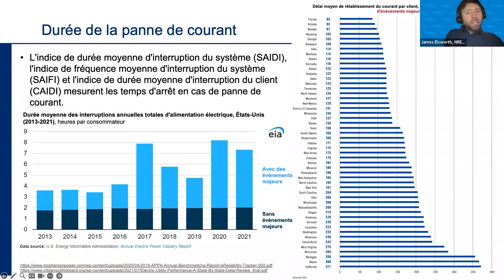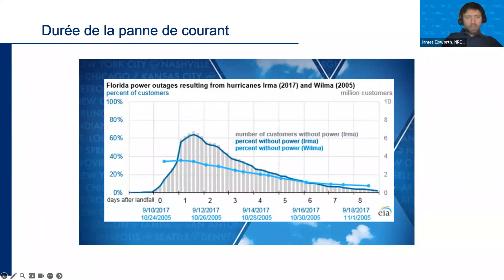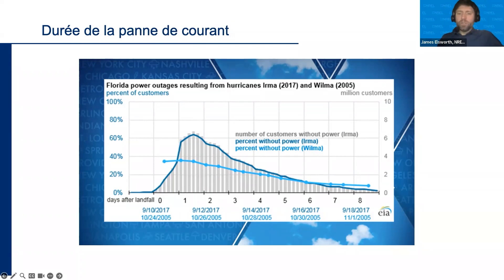A couple of examples on the next slides. The first is Florida after two hurricanes: Hurricane Irma in 2017 and Wilma in 2005. On the x-axis is the number of days after landfall; on the y-axis is the percentage of customers without power. One hurricane had almost 40 percent of people without power, another up to 60 percent, but most — maybe 90 percent — had power back after about nine days.